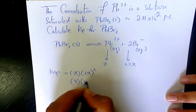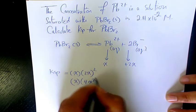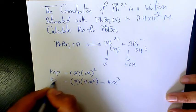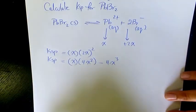So X times 4X squared, which will be 4X cubed, is going to be equal to Ksp.